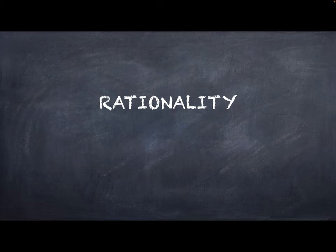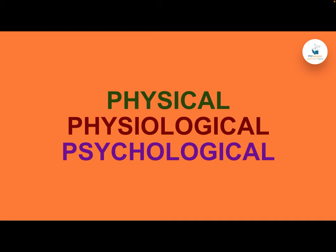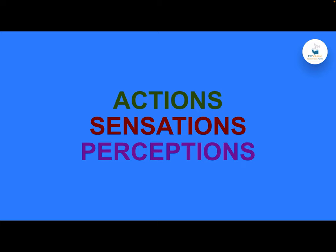Let us try and understand rationality, irrationality, and the conversion of irrationality into rationality. Rationality is the natural order of energy conservation — our primary focus is always how to conserve energy. To understand this, we need to identify three layers of existence: physical, physiological, and psychological.